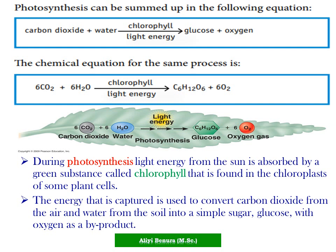During photosynthesis, light energy from the sun is absorbed by a green substance called chlorophyll, found in chloroplasts of some plant cells. The energy captured is used to convert carbon dioxide from the air and water from the soil into simple sugar — glucose — with oxygen as a byproduct.